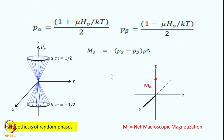Since the population of the beta state is lower than the alpha state, there is no complete cancellation of the opposite z-axis orientations. Therefore, there is a net magnetic moment M-naught along the positive z axis, the direction of the magnetic field. M-naught equals P-alpha minus P-beta times mu, multiplied by N, the total number of spins in the ensemble, representing the total magnetization of the spin system.